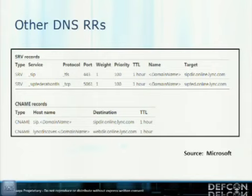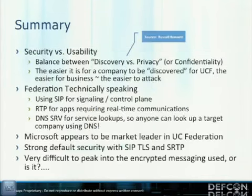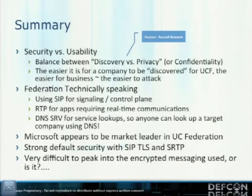We're not going to do research or attacks against Microsoft's public web service, but you have Office 365 — a hosted UC solution — with its actual servers for hosted customers. People need to start thinking about this because as UC federation takes off, these domains are wide open from a recon perspective for finding companies to attack. It's always the balance between discovery versus privacy. When you turn on federation, it's easy to be discovered but also easier to get attacked.